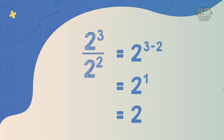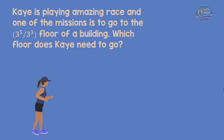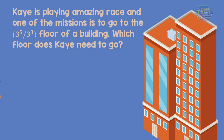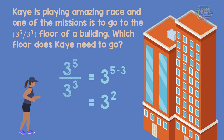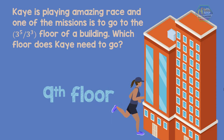Another example: K is playing Amazing Race and one of the missions is to go to the 3 raised to the power of 5 over 3 raised to the power of 3 floor of a building. Which floor does K need to go to? Since the numerator and denominator have the same base, we copy the base and subtract the exponents. The equation will become 3 raised to the power of 5 minus 3, which is equal to 3 raised to the power of 2. So 3 should be multiplied 2 times. Therefore, the answer is 9 — K should go to the 9th floor.